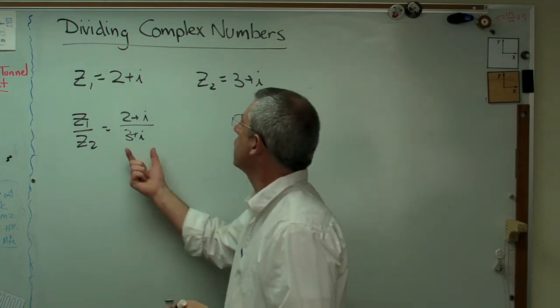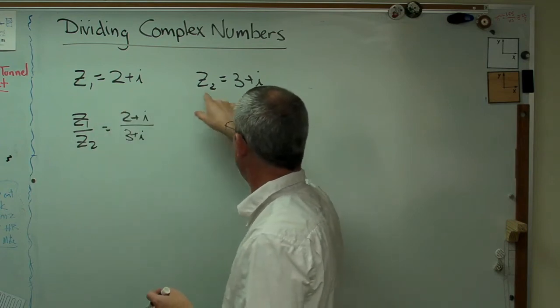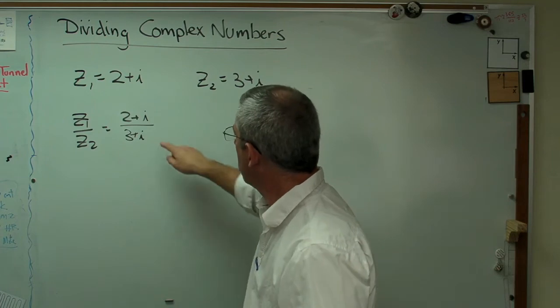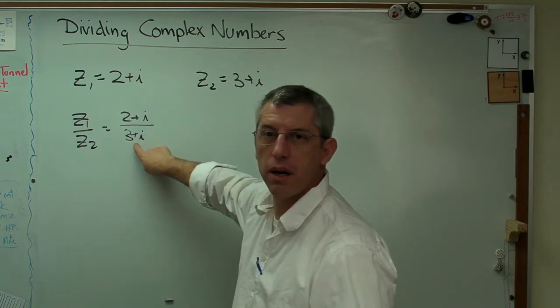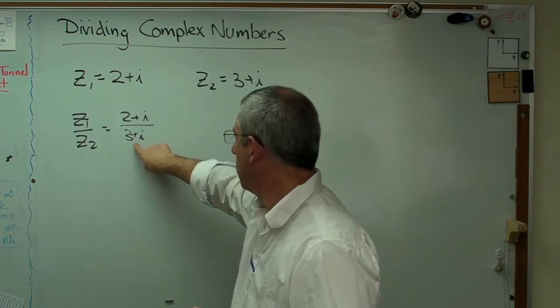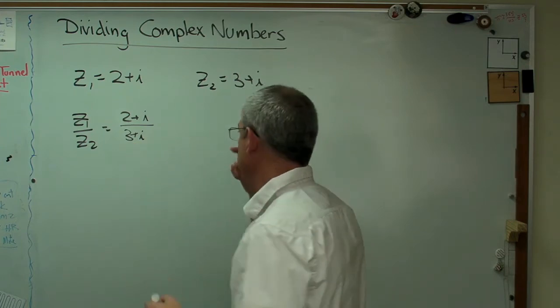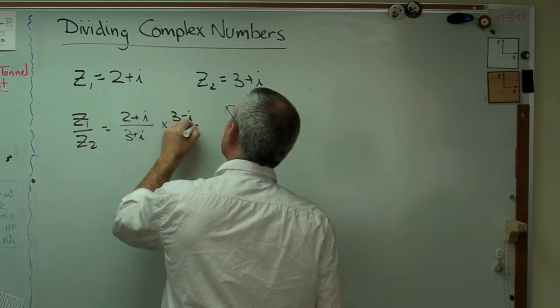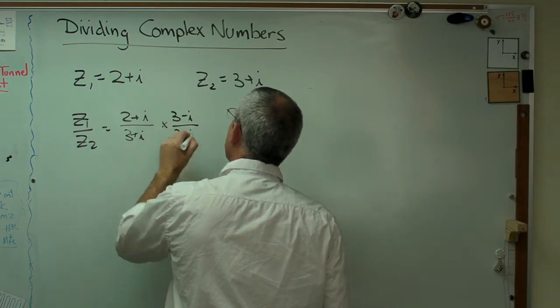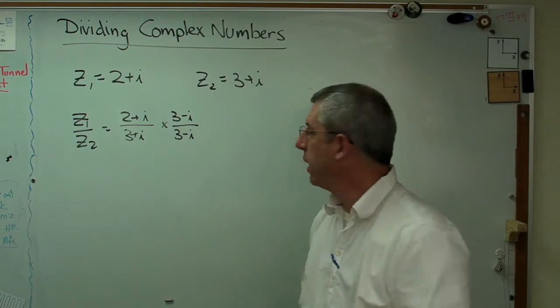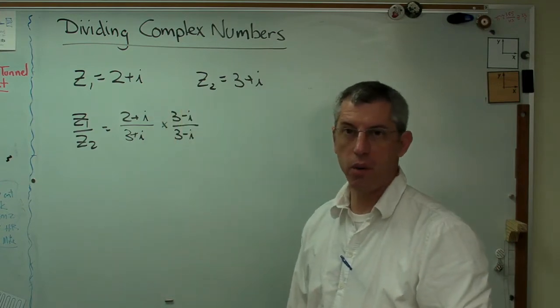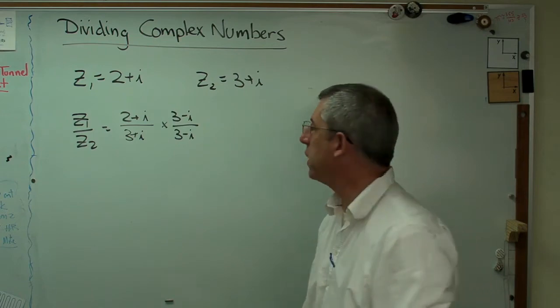Well, generally the way you simplify this when you write these out in this format, what I'm going to call rectangular format, you have to do something to make the number in the denominator be real. Well, easiest way to do that is multiply both the numerator and the denominator by 3 minus i. That number right there is 1. I can multiply things by 1 all I want, and I don't change anything.